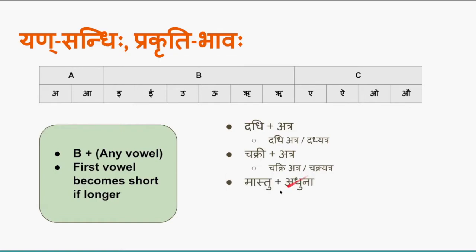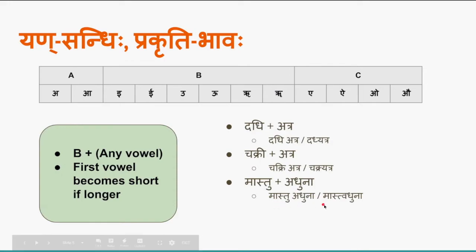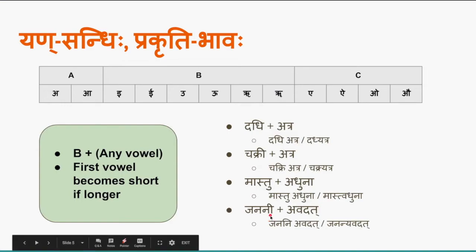The next example is 'mastu + adhuna' — ukara plus akara, which is a yanaadesha sandhi case (b plus a). With prakriti bhava it becomes 'mastu adhuna'; with regular sandhi it becomes 'mastvadhuna'. The next example is 'janini + avadath' — ikara plus akara. With prakriti bhava the long ikara becomes short: 'janini avadath' with no sandhi applied. With yanaadesha sandhi it becomes 'janinyvadath'.